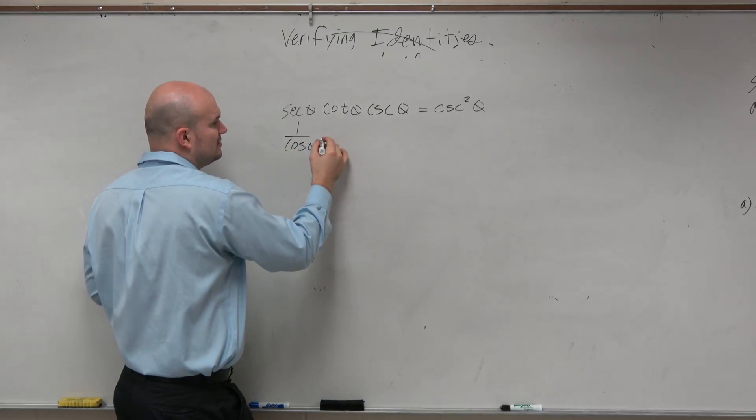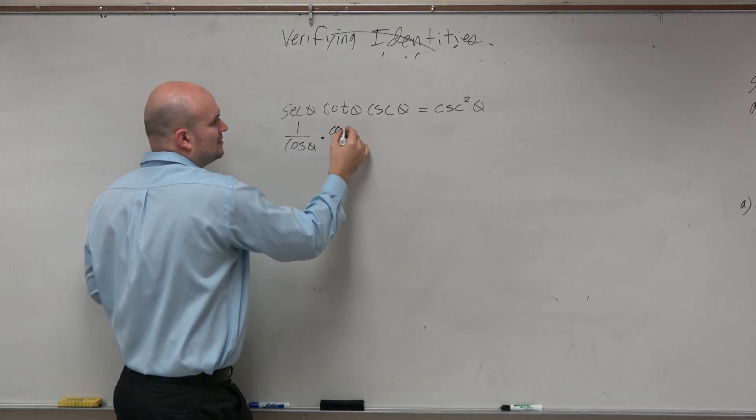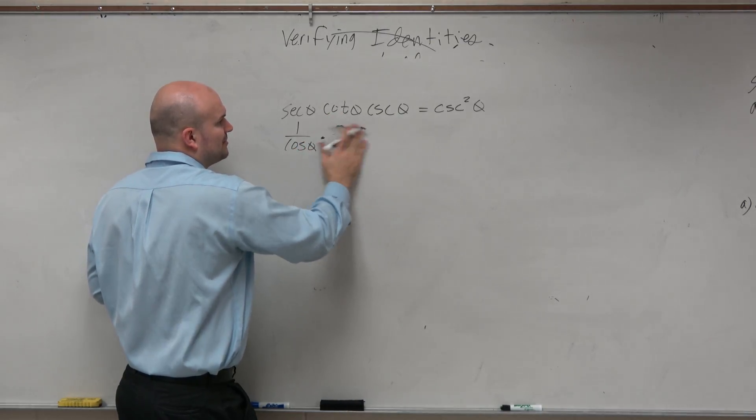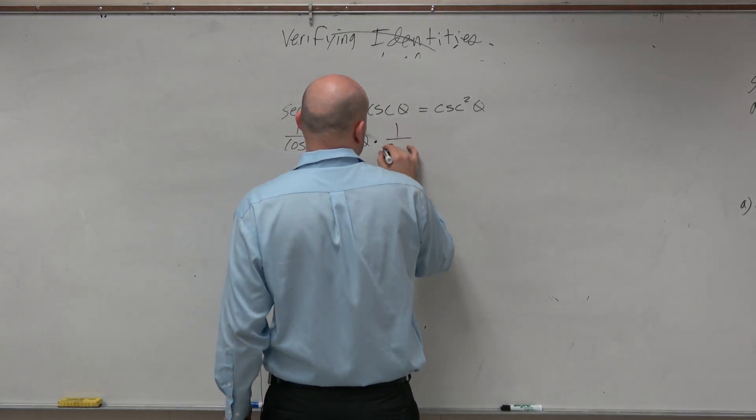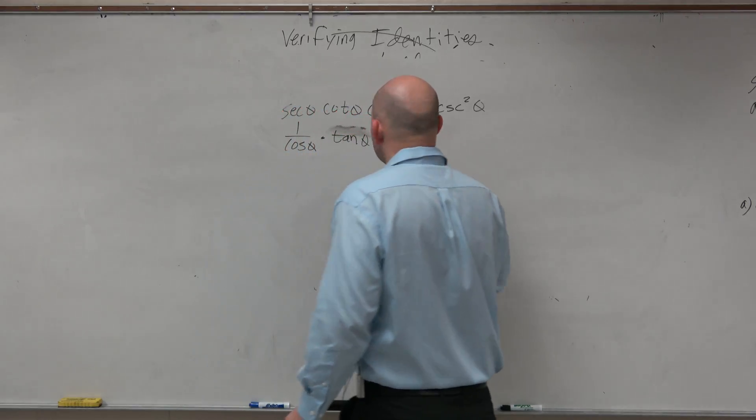So that's 1 over cosine of theta. This is cosine of theta, or let's do reciprocal. So that becomes tangent of theta times 1 over sine of theta. And we want that to equal to the right side.